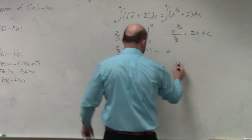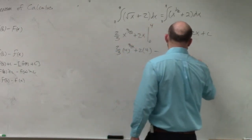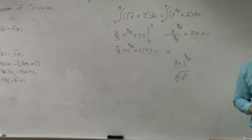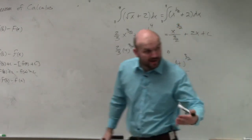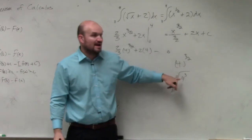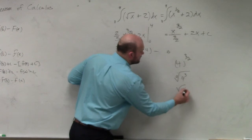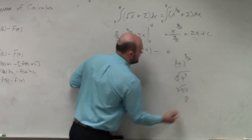Remember that 4 to the 3 halves is the same thing as the square root of 4 cubed. Remember how to rewrite a rational power as a radical. So therefore, 4 cubed is 64. The square root of 64 is equal to 8.